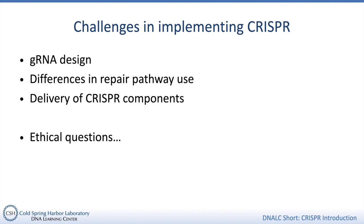Scientists have also come up with all sorts of creative ways to use CRISPR to do different things. Mutated Cas9 proteins that can't cut DNA, often called dead Cas9 or dCas9, can be fused to other proteins, which can then be targeted to specific DNA targets. There are also other Cas proteins that behave a little differently than Cas9 that can be used to detect the presence of a particular DNA sequence. So while you probably won't be doing CRISPR in your living room anytime soon, you might very well use it if you work in a biology lab.